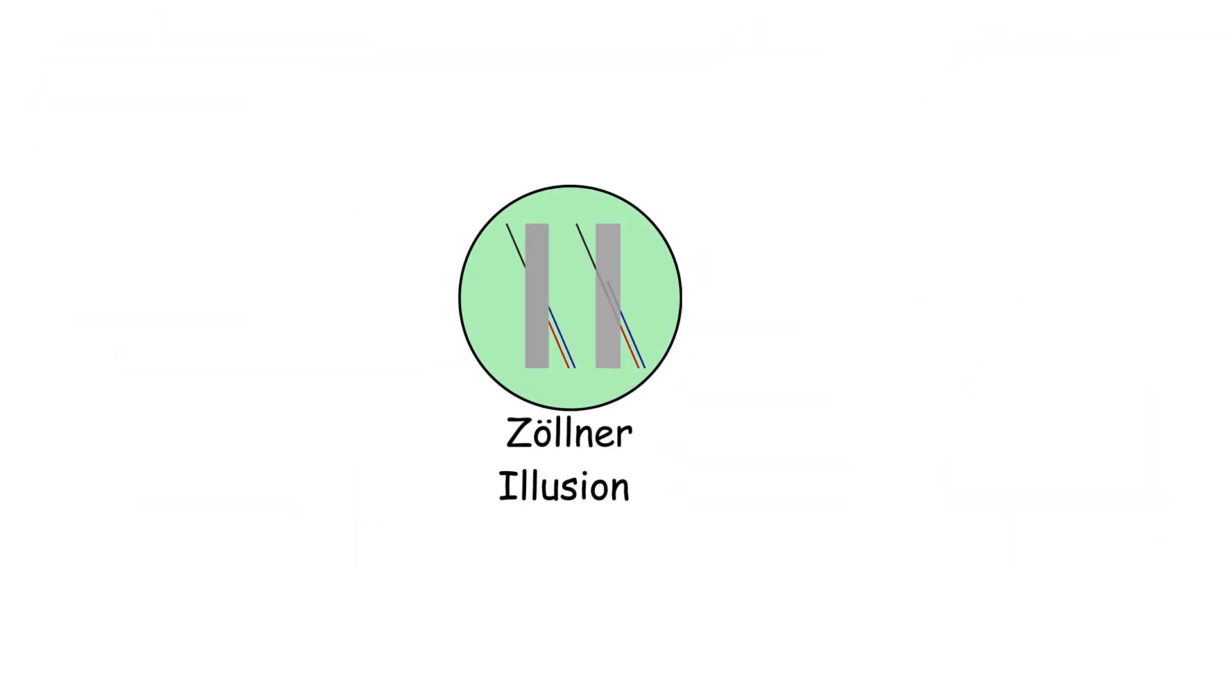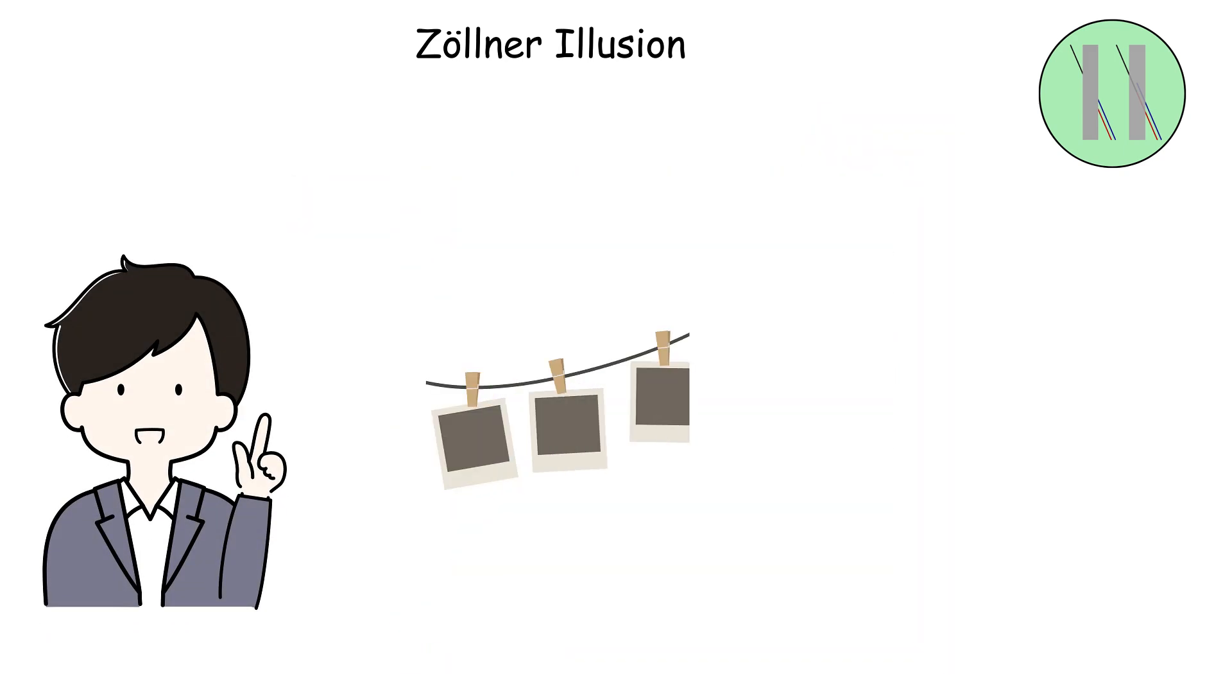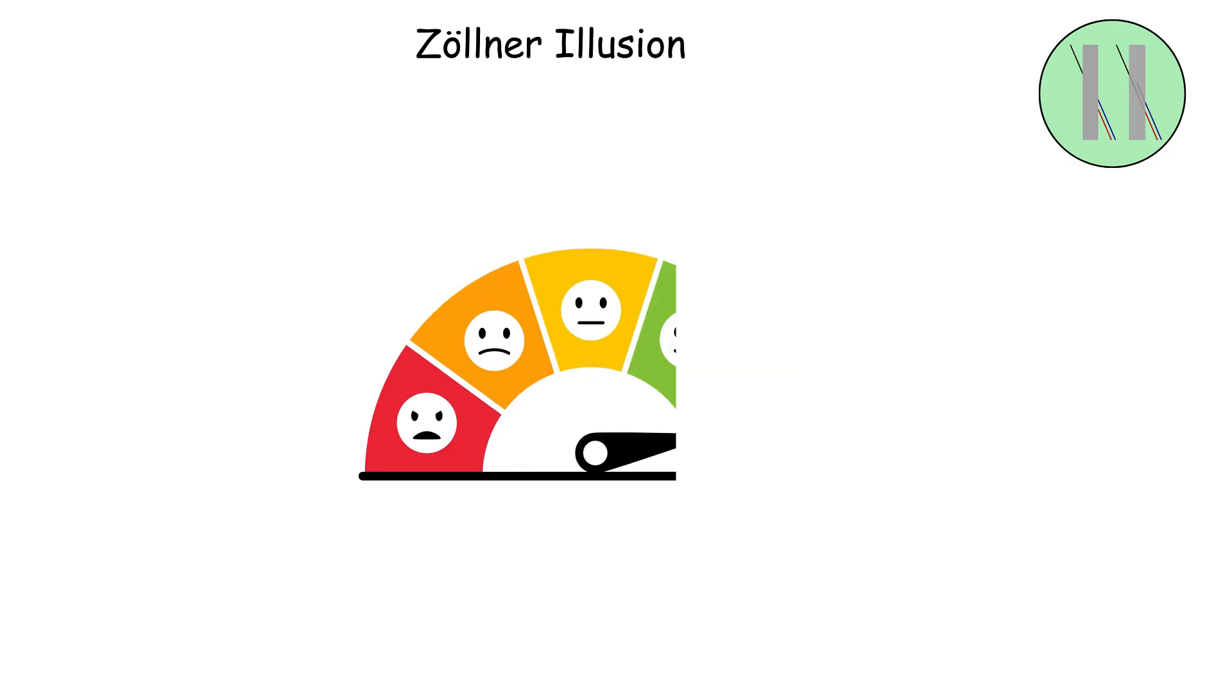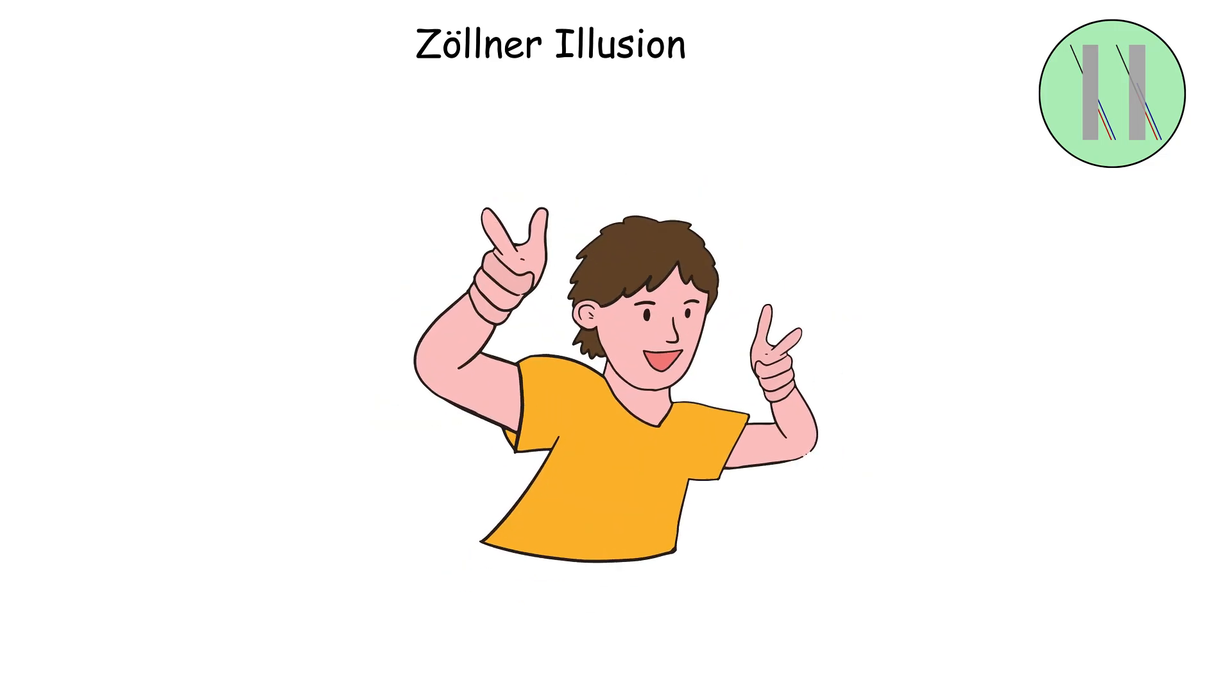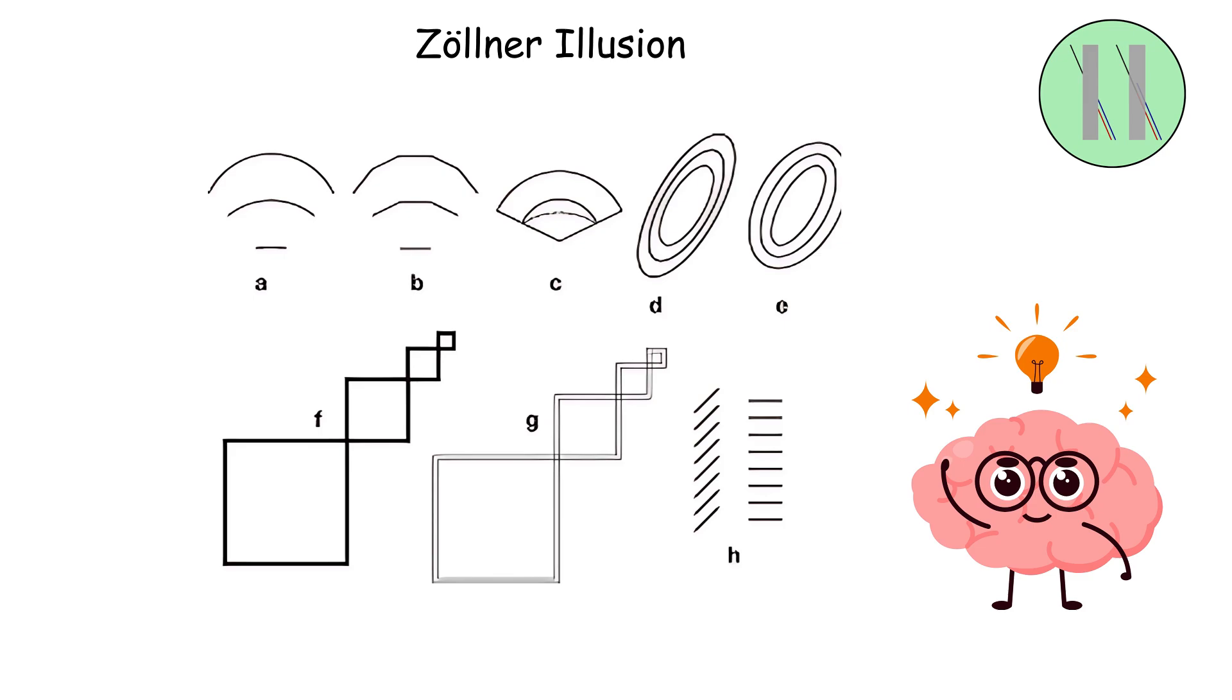The Zöllner Illusion. Imagine you're hanging picture frames on your wall, and you're convinced they're all crooked even though you used a level on every single one. You keep adjusting them, but they still look tilted no matter what you do. That's basically the Zöllner Illusion torturing you, and it's one of the most frustrating geometric tricks your brain can experience.